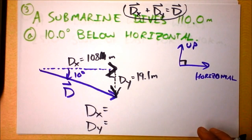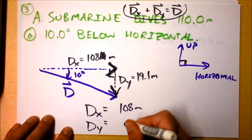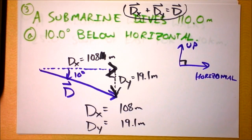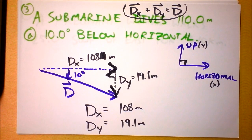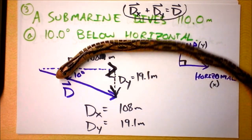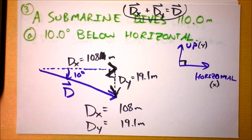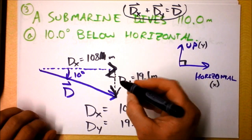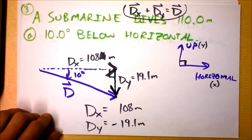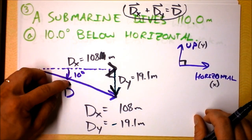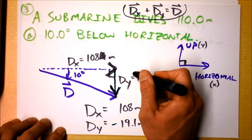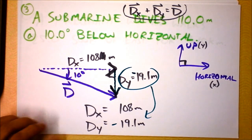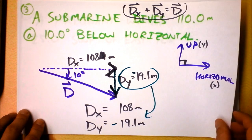Here's a particular problem: if I just write down 108 meters and 19.1 meters, I've made a mistake. I defined up as y and horizontal as x, so the downward-pointing y-component is negative — I have to add that negative sign by hand. I used 10 degrees as the positive angle and kept these as lengths of sides, but when I write the final answer I notice this component points downward, so it's negative. If you make that mistake, everything will be thrown off, so please be careful.